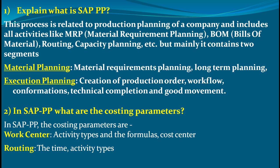The first question is: explain what is PP. Production Planning is related to the production planning of any organization and it includes many activities like MRP (Material Requirements Planning), BOM (Bills of Material), routing, capacity planning, etc. This module is divided into two segments: material planning, which is a long-term plan for material requirements, and execution planning, which covers creation of production order workflows, confirmations, technical completions, and goods movement.